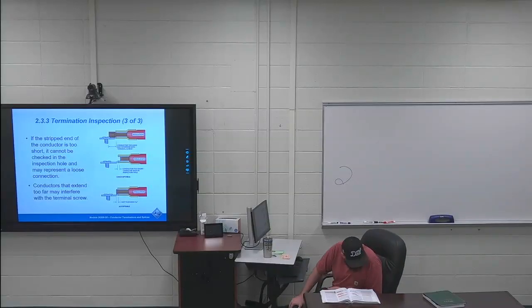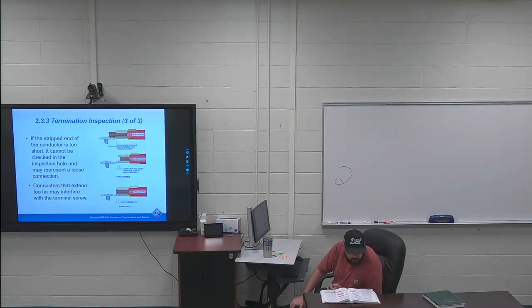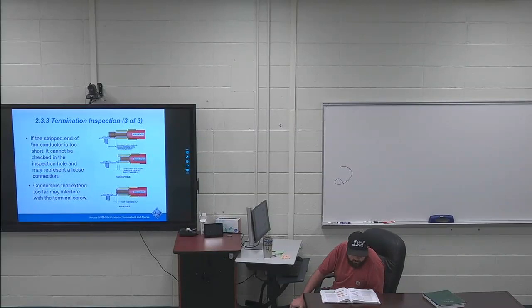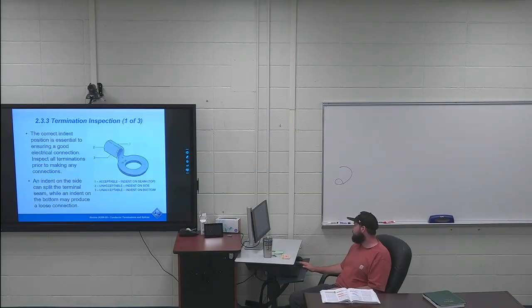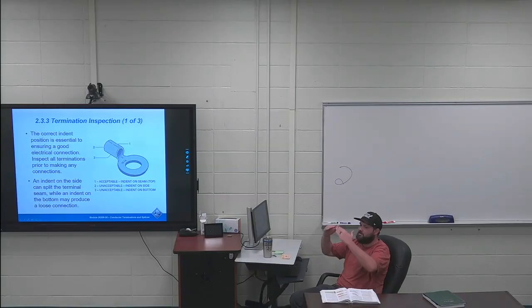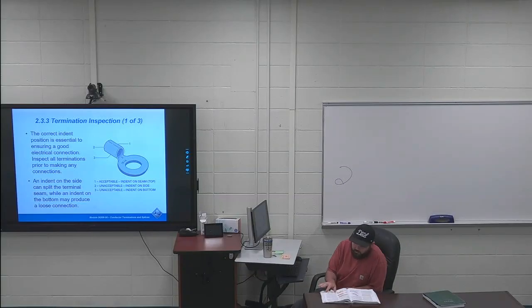Top right of page 22, 2.3.3 terminal inspection. I always say do a tug test on these after you terminate them. Top right of page 22, second sentence is highlighted: the crimp barrel is designed to provide the best mechanical strength when the indent is properly placed on the top seam of the barrel. All of these have a split seam on them. This is where you want to put your indent, not on the back. I used to think the back was where you put this indent. Nope. You want your indent on the top. You want this to fold over and clamp down onto your wires, creating a good termination.